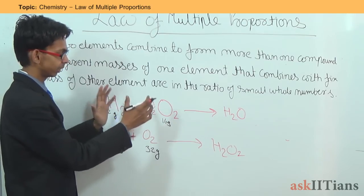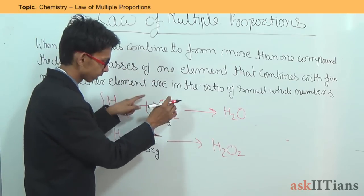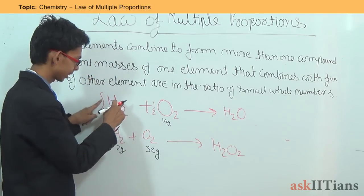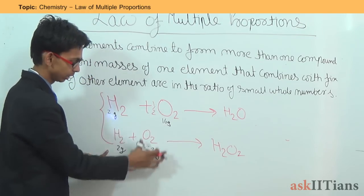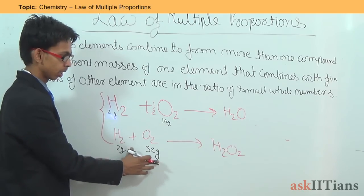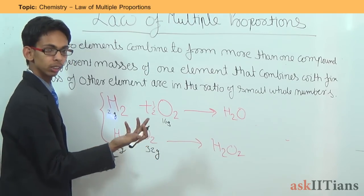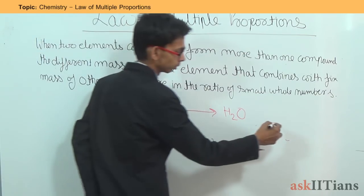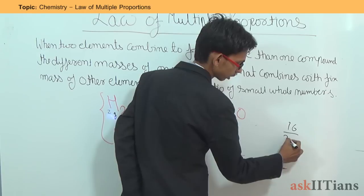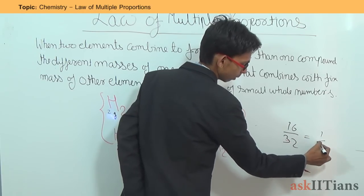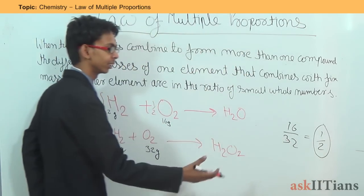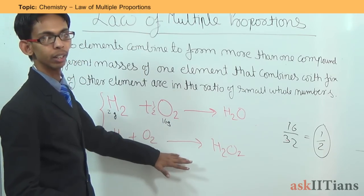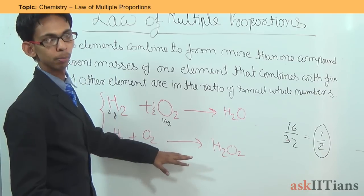The ratio of different masses of oxygen — the element combining with the fixed mass of hydrogen — is 16 to 32, which simplifies to 1 to 2. This is again a simple whole number ratio, satisfying the law of multiple proportions.